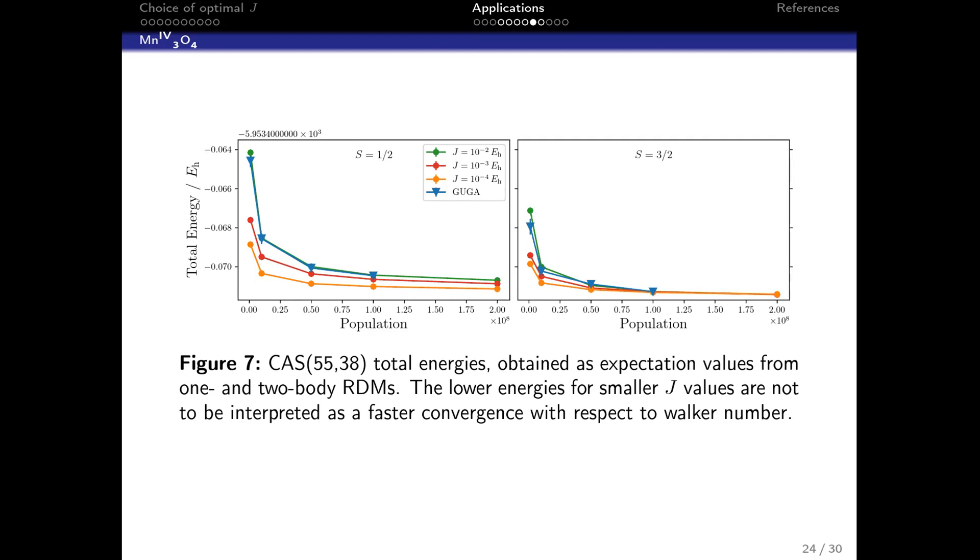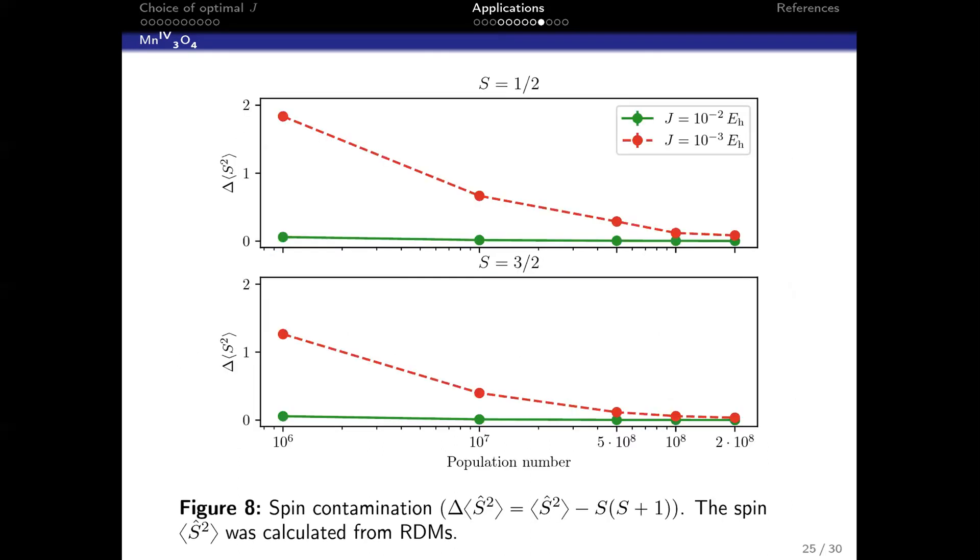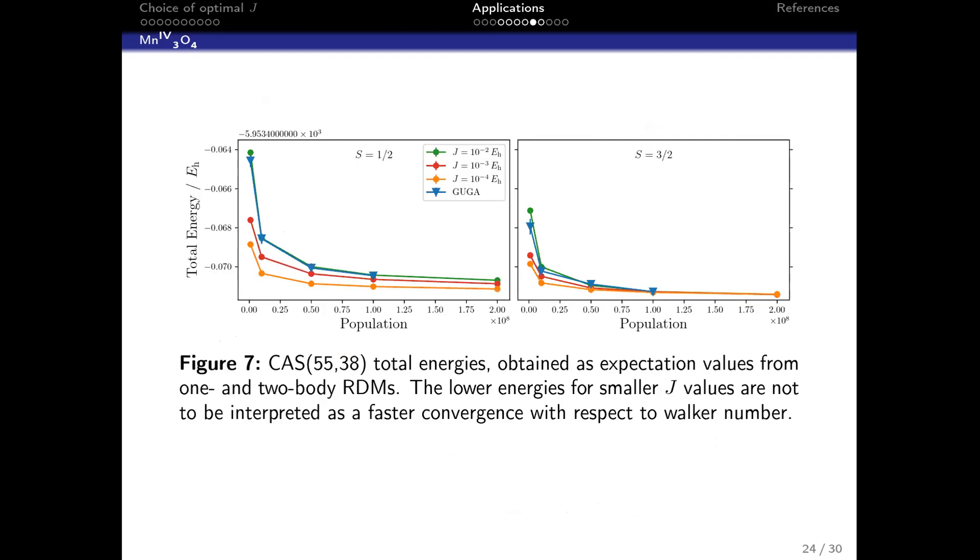This emphasizes one tricky thing about the method. If you go from doublet to triplet, it's like being ferromagnetically ordered, while if you go from quartet to higher spin states, it's like being anti-ferromagnetically ordered. So from the quartet you don't have the problem of pulling in the higher spin states, while from the doublet you might pull in spin states from above. This shows in the behavior with regards to the J value.